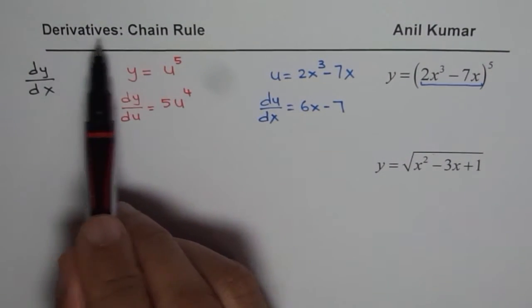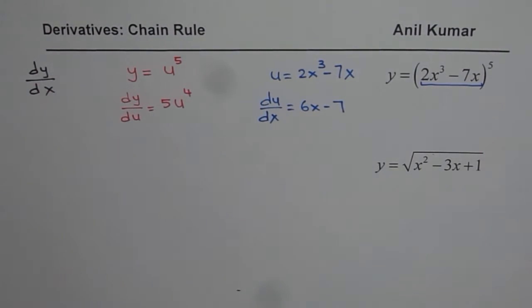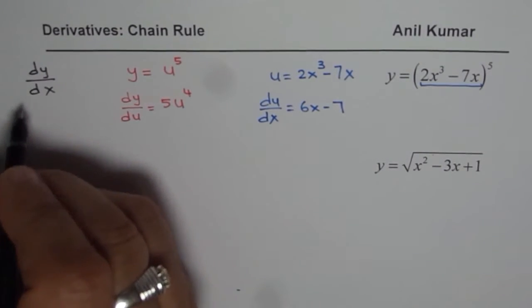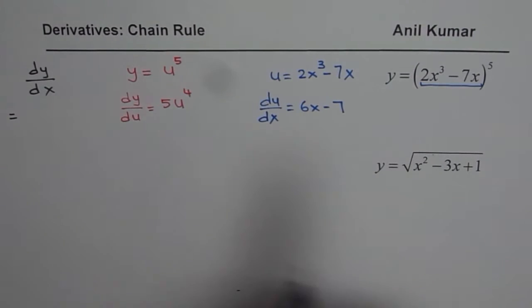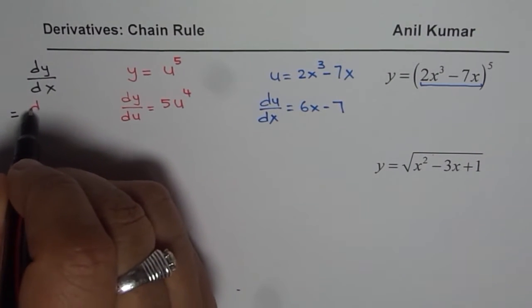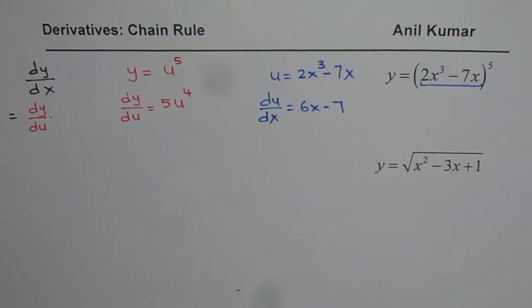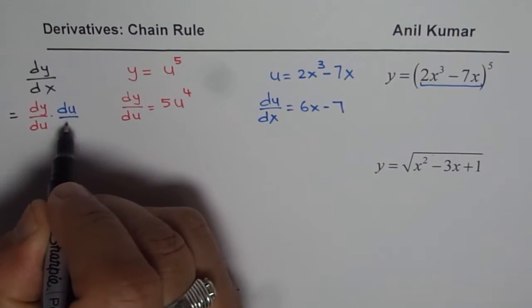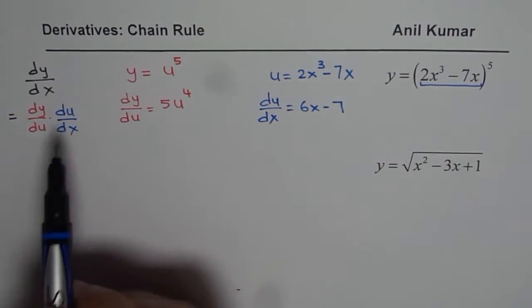Now, chain rule gives us the connection between these two. What we can think about is writing dy/dx as equal to dy/du times du/dx. So that becomes a chain rule.